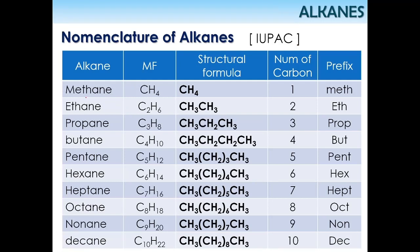You need to remember all of the following names. One carbon alkane is methane, two carbon is ethane, then propane, butane, pentane, hexane, heptane, octane, nonane, decane and so on. You need to remember this series, and also the corresponding prefixes.